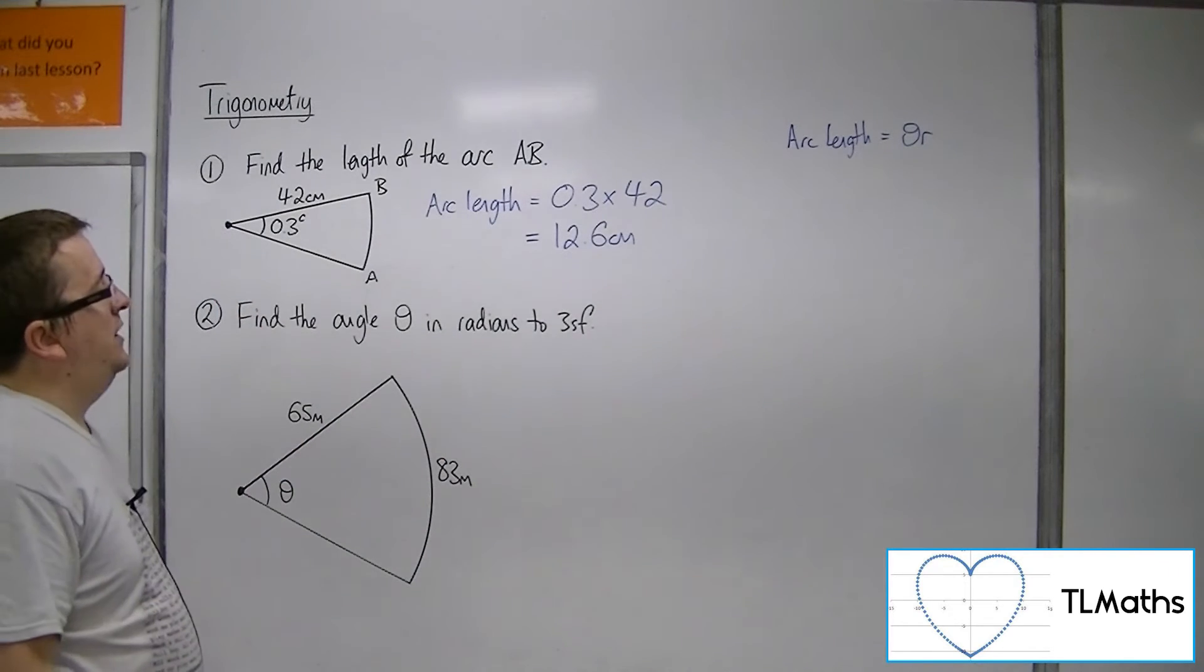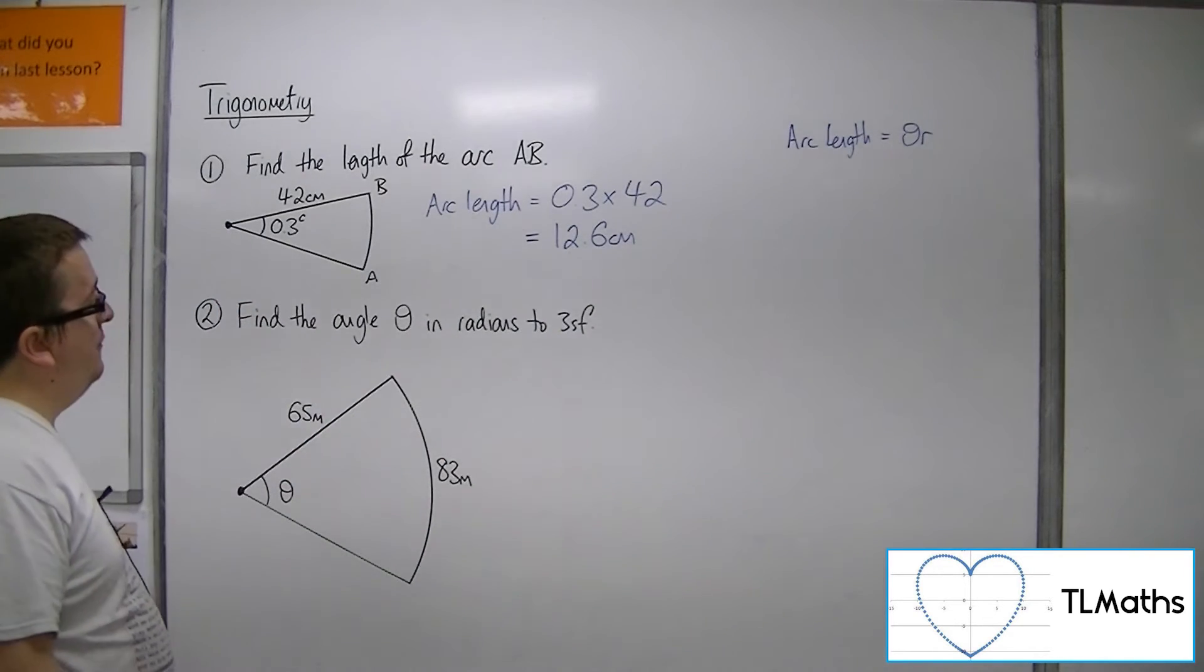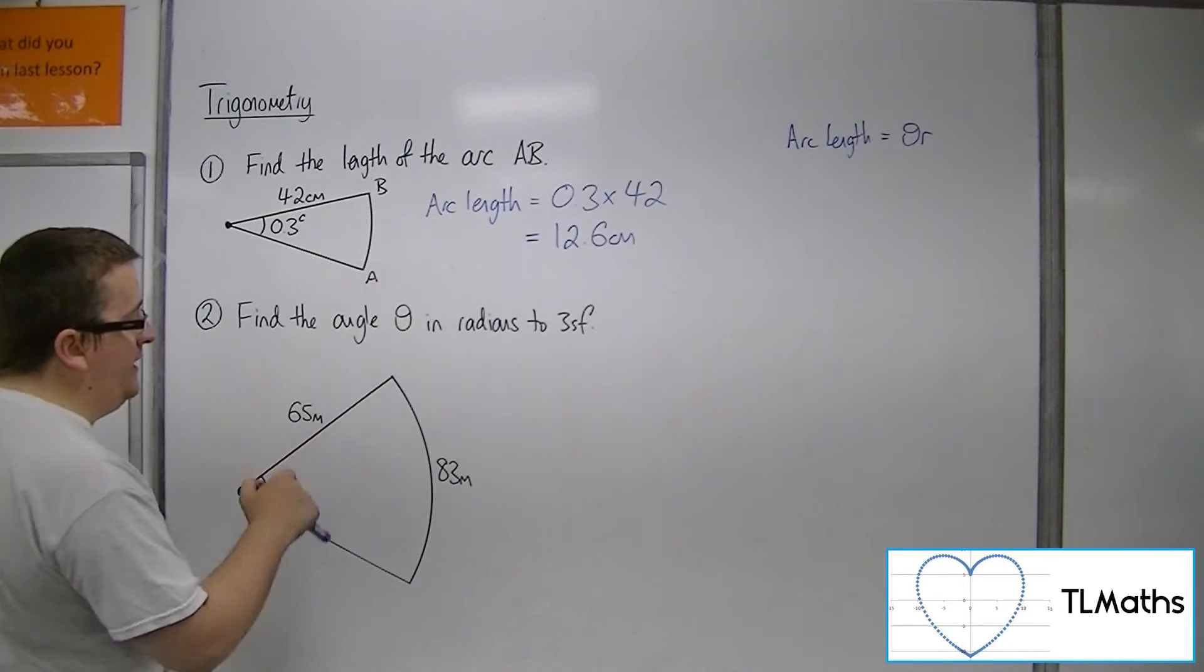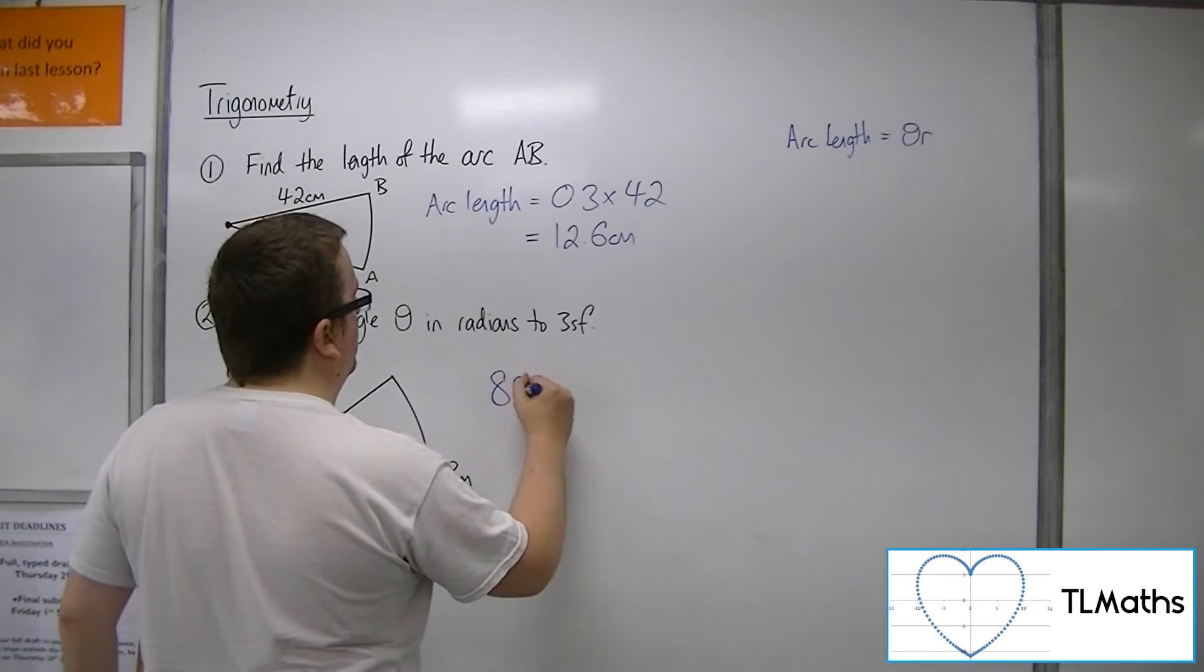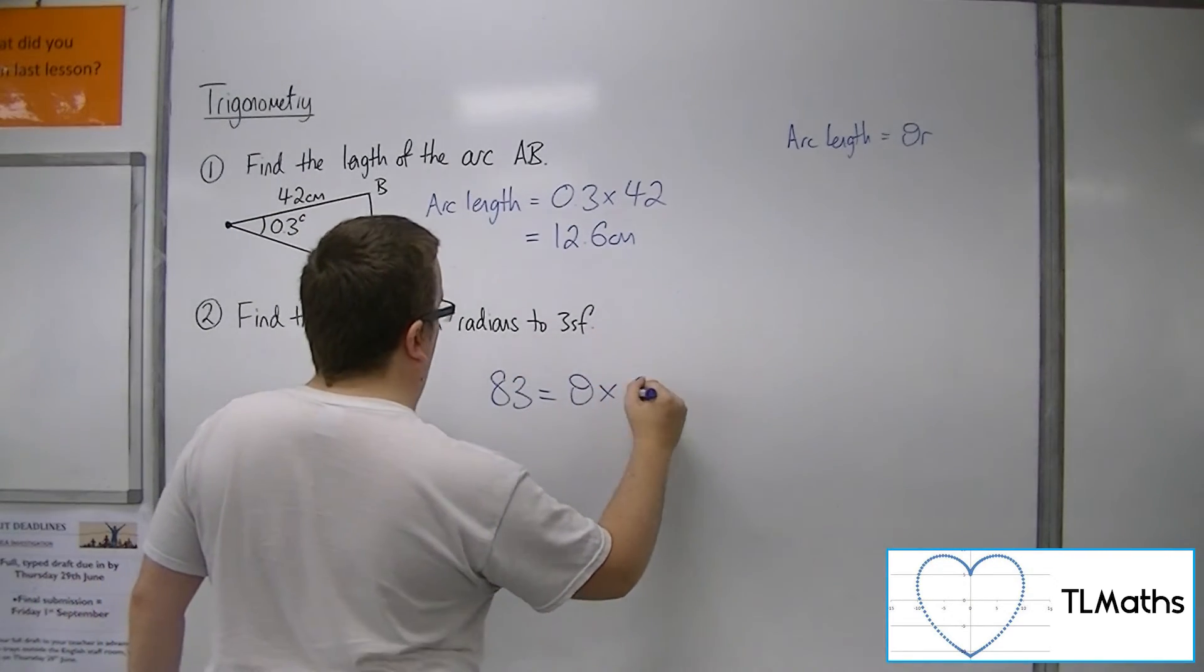In number two, I need to find the angle theta in radians to three significant figures. What I have here is the arc length, 83 meters. I know the radius is 65 meters, so 83 must be equal to theta times by 65.